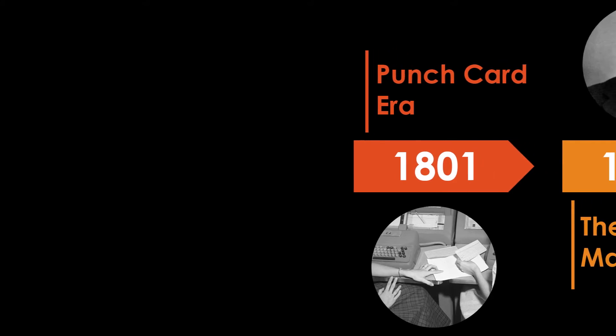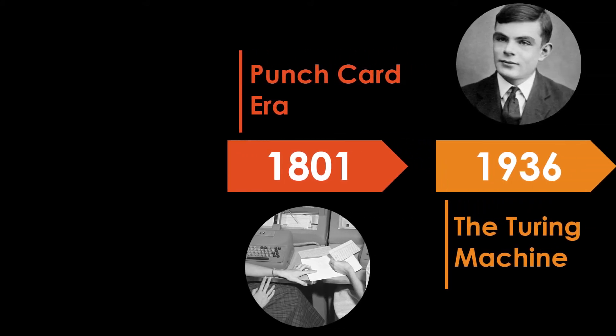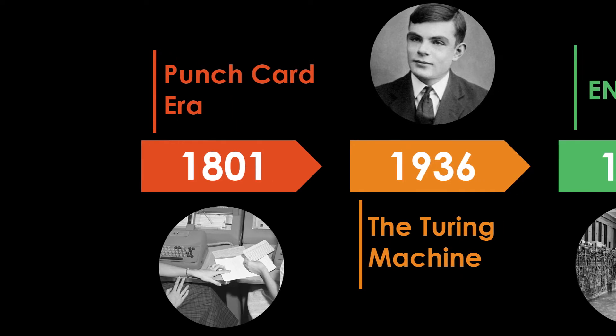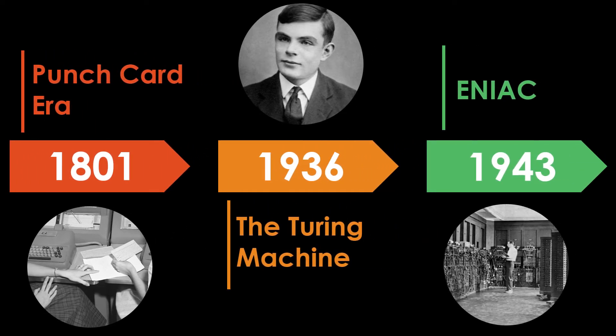In 1801 up to 1890, the punch card system was used in order to compute numerical data. In 1936, Alan Turing presents a notion of a universal machine.